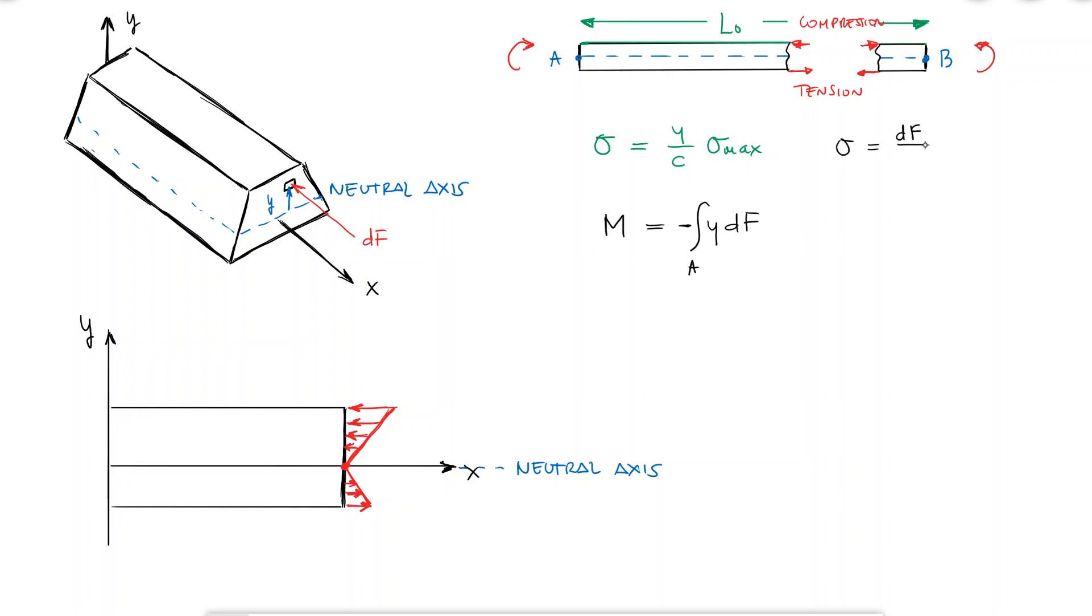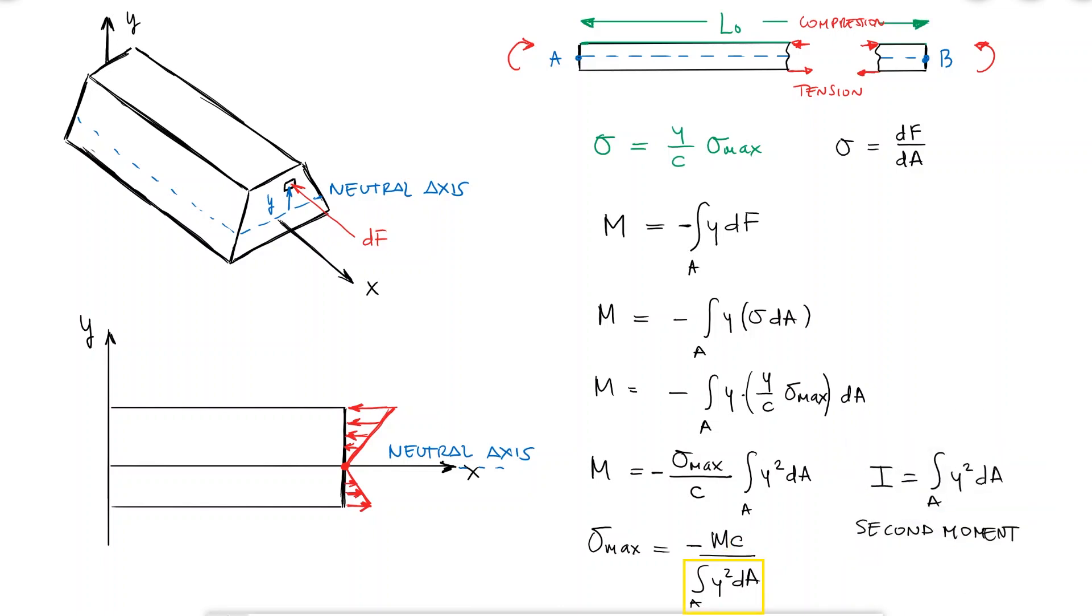Since the stress is force over area, I can substitute dF, and since sigma is a function of y, I need to substitute it to explicitly show that. By taking out the constants and solving for sigma max, I find an expression that allows me to calculate the maximum normal stress due to bending in terms of the moment, the distance to the neutral axis, and what we call the second moment of area.